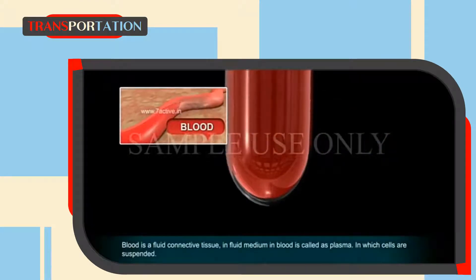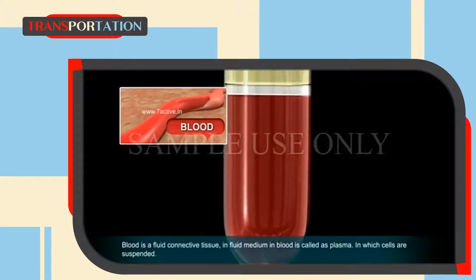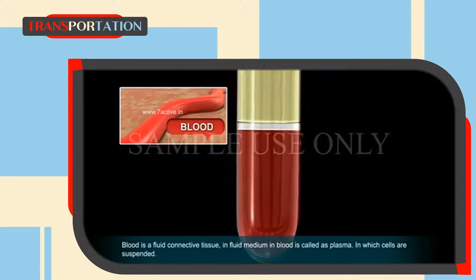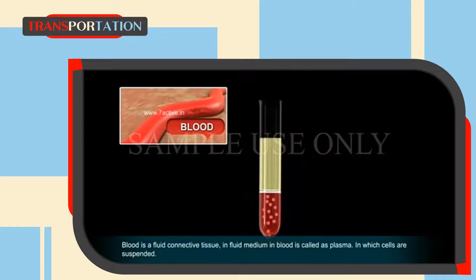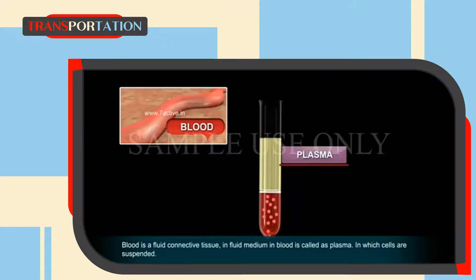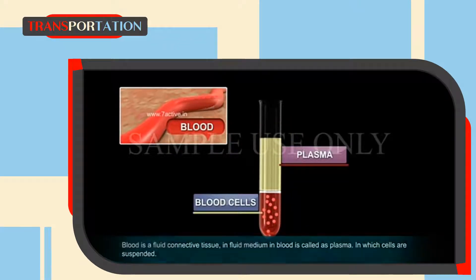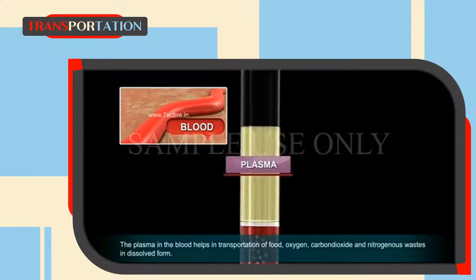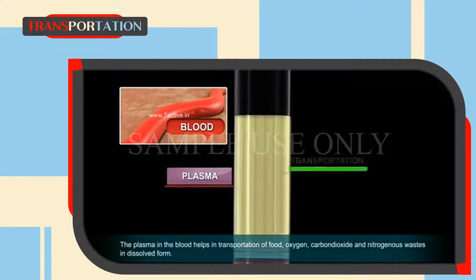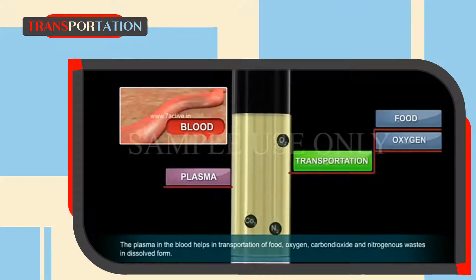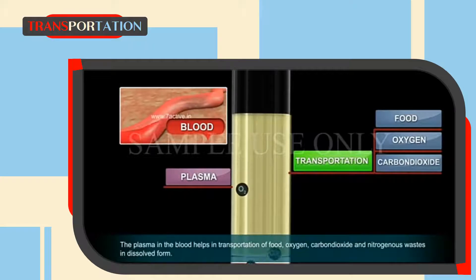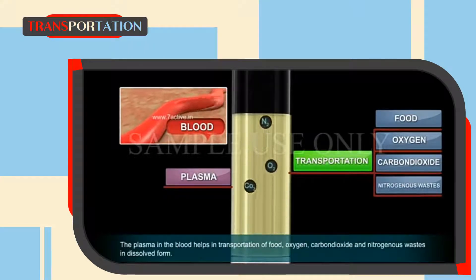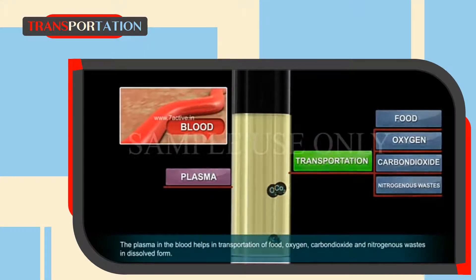Blood is a fluid connective tissue. The fluid medium in blood is called plasma, in which cells are suspended. The plasma in the blood helps in transportation of food, oxygen, carbon dioxide, and nitrogenous waste in dissolved form.